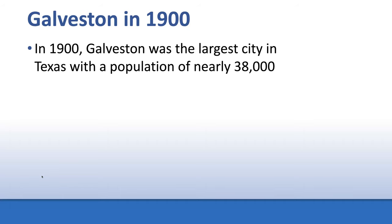In 1900, Galveston was the largest city in Texas with a population of nearly 38,000 people. That might not seem like many today, but this was a time when most people lived in rural areas — farming and ranching in the country.